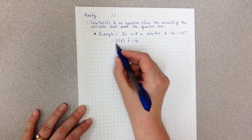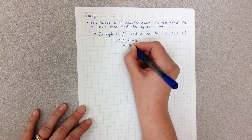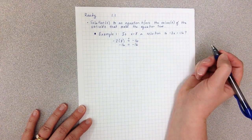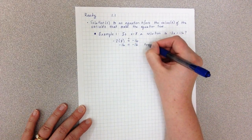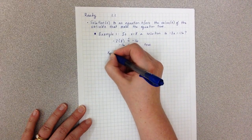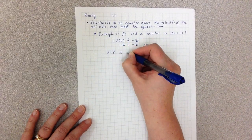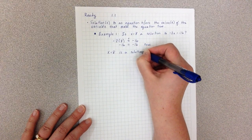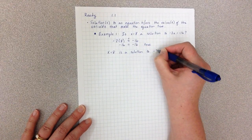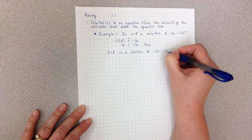And then I simplify. Negative 2 times 8 is negative 16, and that does equal negative 16. So we say this is true. So we say x equals 8 is a solution to negative 2x equals negative 16.